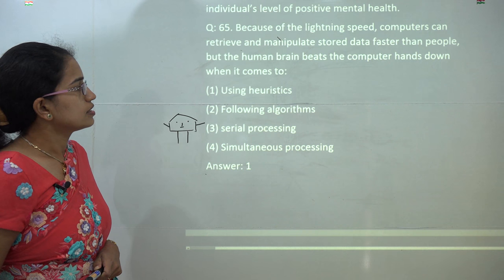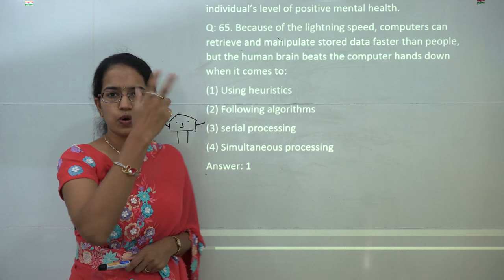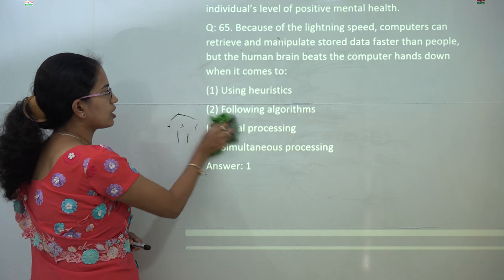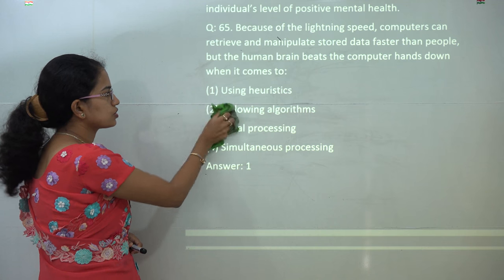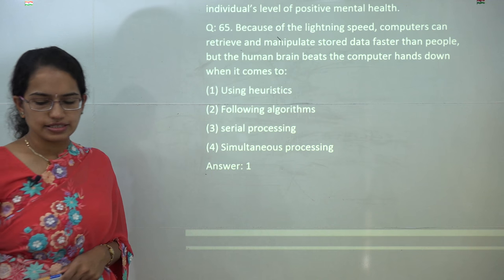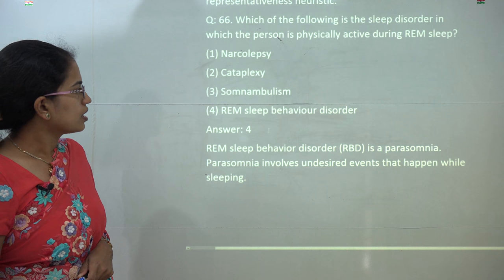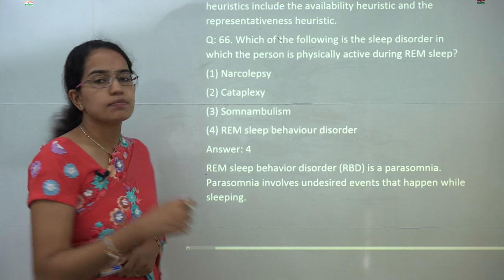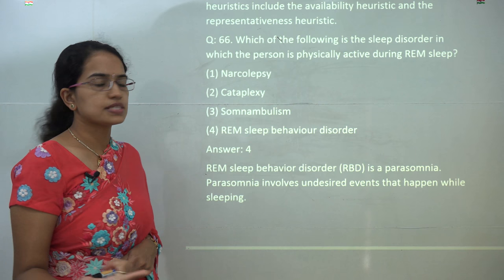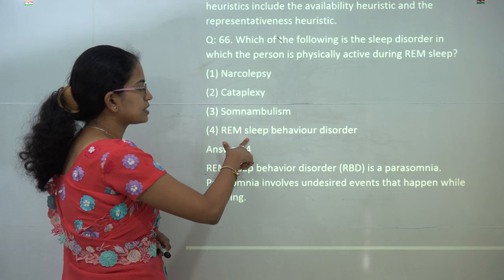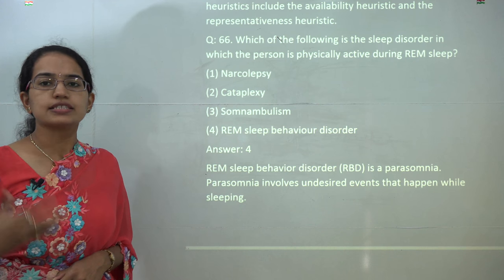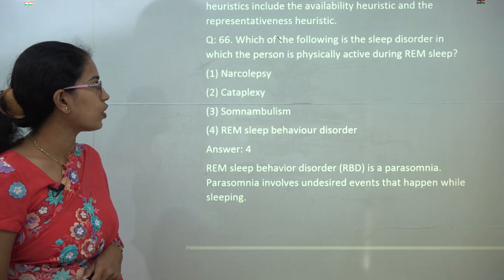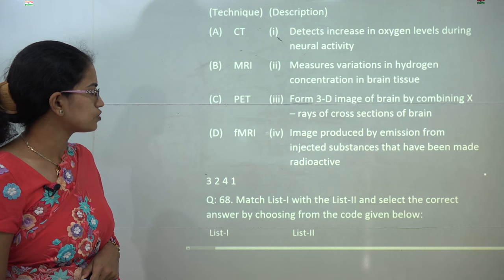The next is a similar question to what was asked in the last section. When we are talking about humans, we talk about the use of heuristics. So you have 1 as the correct answer for this question. The next is, which is a sleep disorder where the person is active during the REM sleep, and the correct answer is REM sleep behavioral disorder. In this, the person becomes very active during REM sleep and sometimes he can be even violent. So the correct answer here is 4.